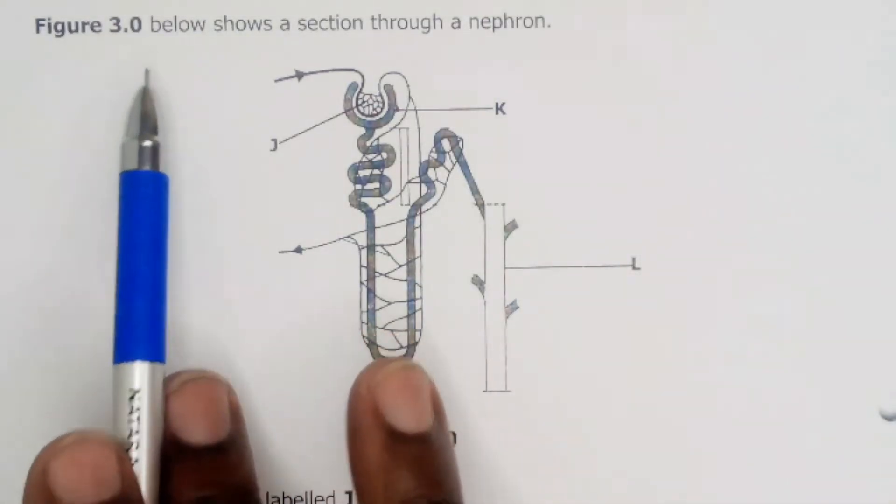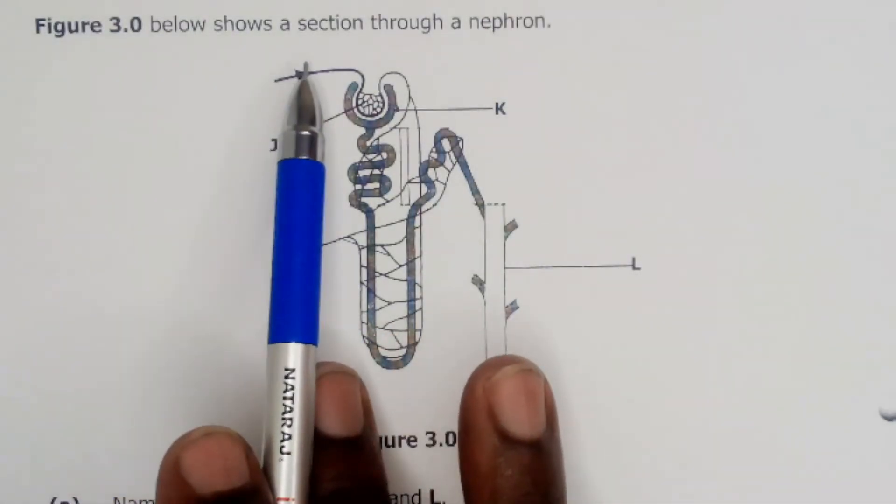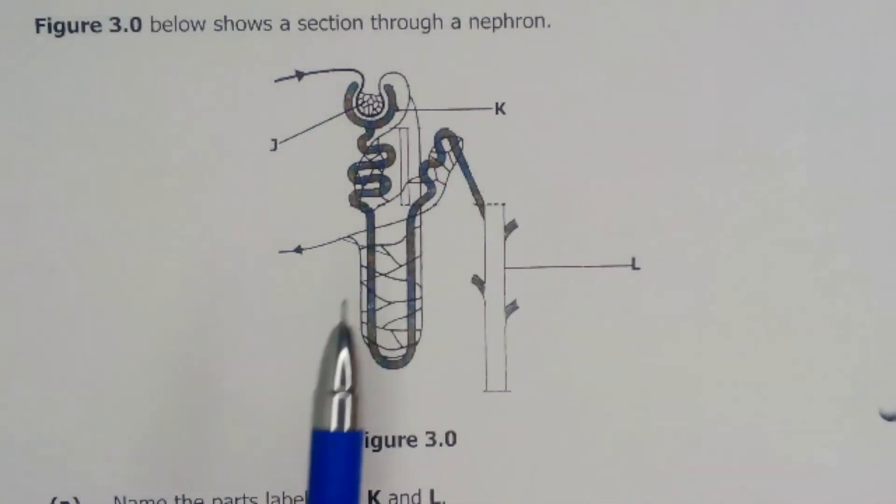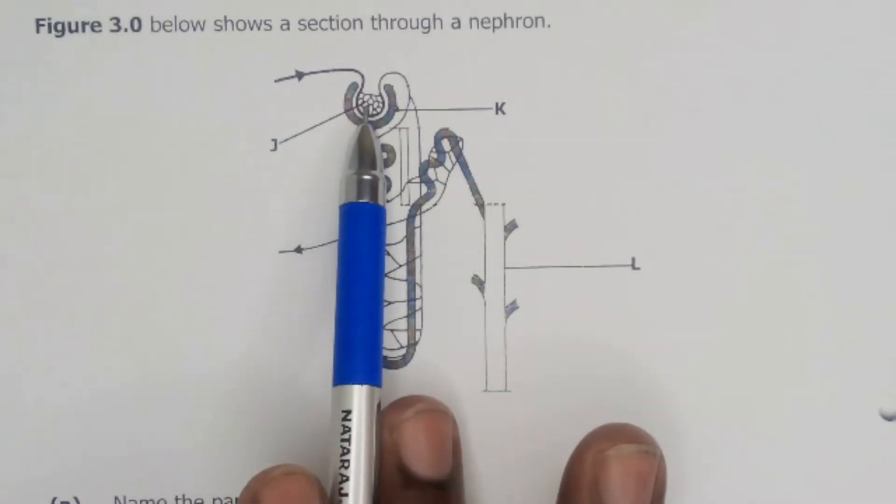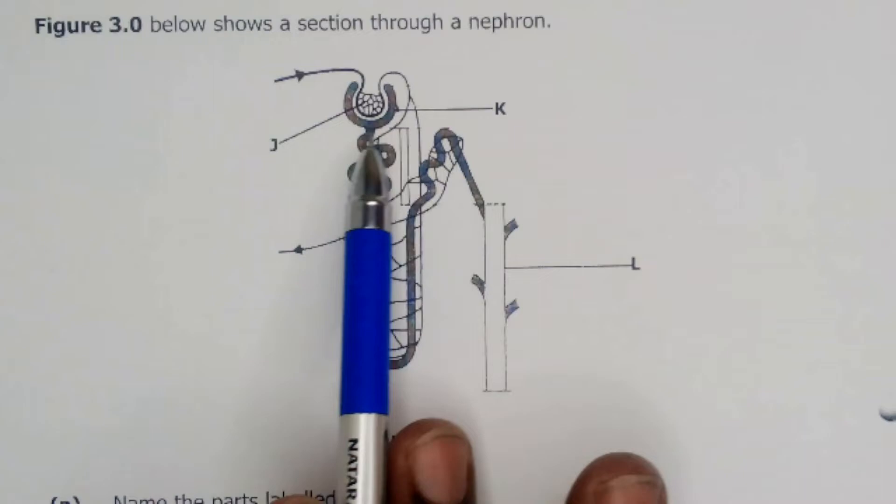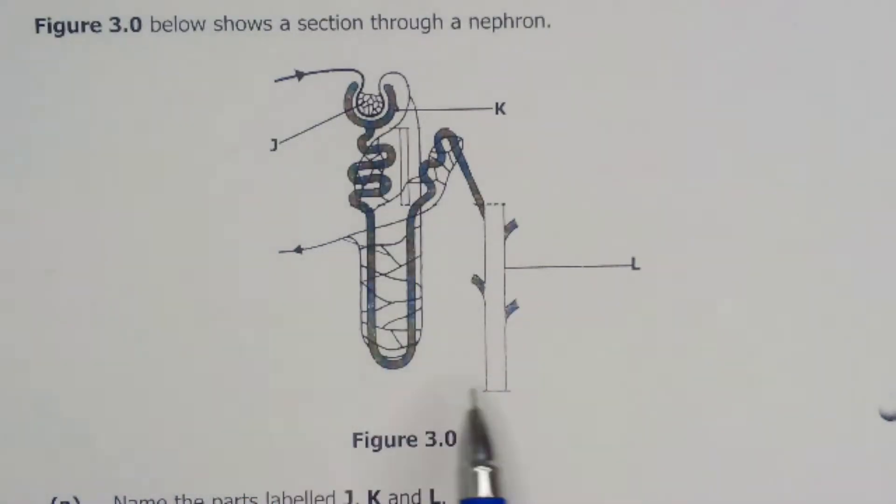This is question number three. Figure 3.0 below shows a section through a nephron. So this is our nephron diagram. We have the part labeled J which is the glomerulus, we have K which is the Bowman's capsule, and we also have part labeled L which is the collecting duct.